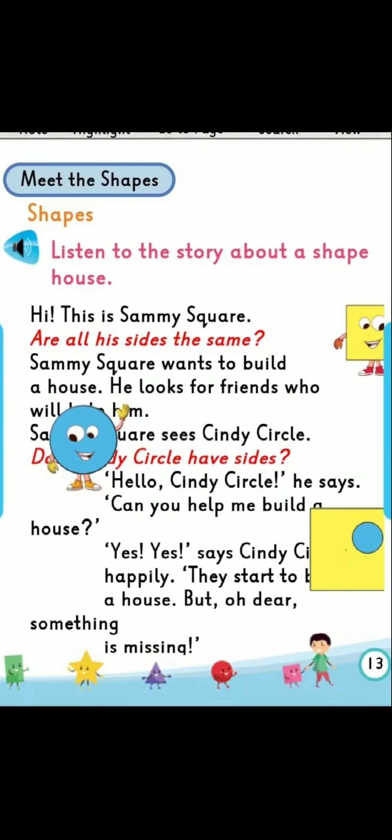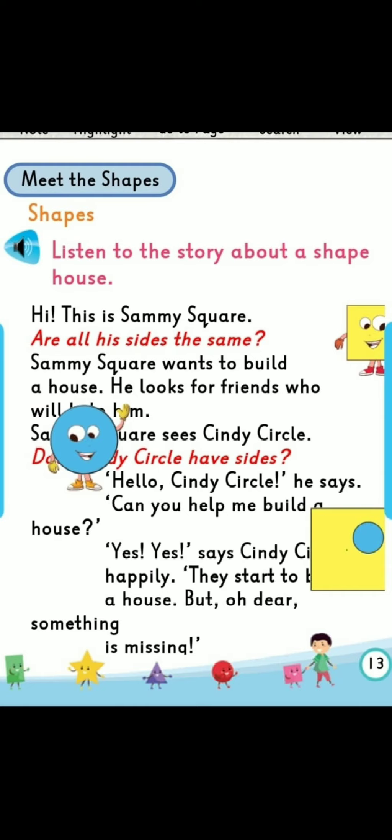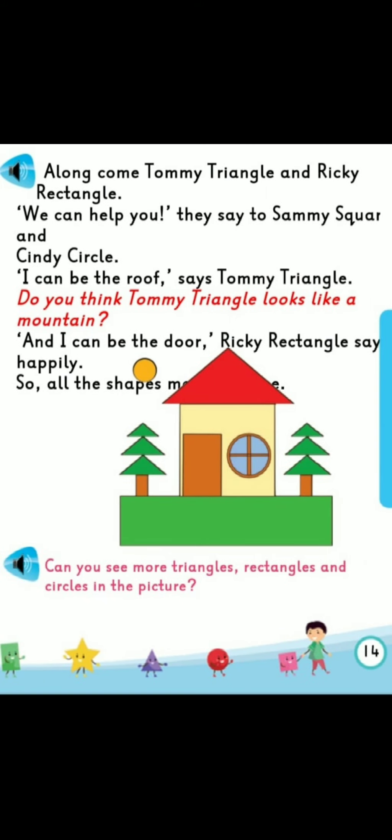So students, from this story we understood that Sammy Square had to build his house, so he went to his friend Cindy Circle and asked her to help. Cindy Circle said yes. Then they noticed the roof and door were missing, so he went to Tommy Triangle and Ricky Rectangle. Tommy Triangle became the roof and Ricky Rectangle became the door, and the house was complete.